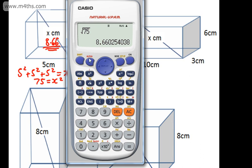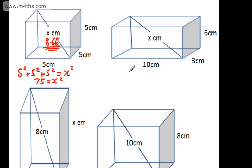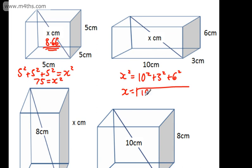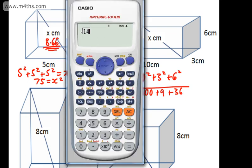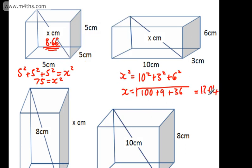If we look at this one, X squared is going to be equal to 10 squared plus 3 squared plus 6 squared. All we need are the dimensions of the three sides. So X is going to be equal to the square root of 100 plus 9 plus 36, which gives us the square root of 145. The square root of 145 gives us 12.04. So 12.04 correct to two decimal places. Check that all these units are the same.